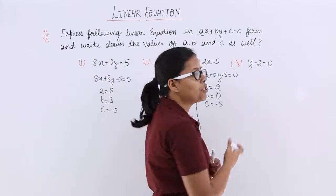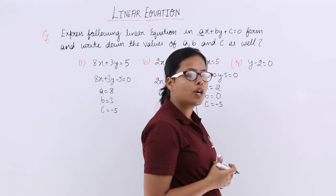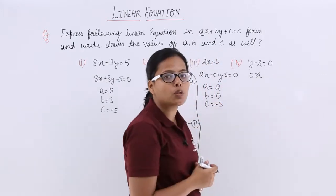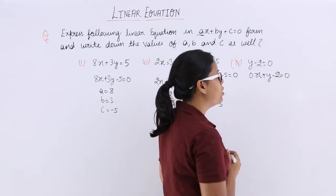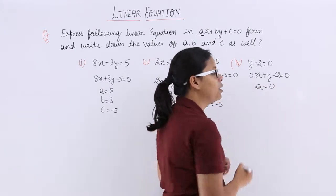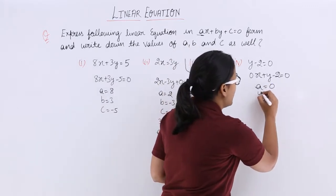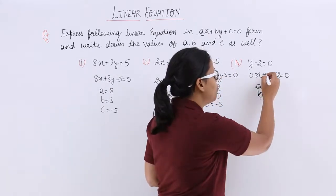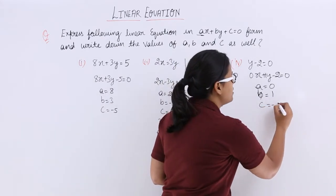Now let's see the fourth part, which is y minus 2 equal to 0. Again represent this in the standard form. We write it as 0 into x plus y minus 2 equal to 0. The value for a is 0, because any number multiplied by 0 is 0. The coefficient of y is b, which equals 1, and the value for c is minus 2.